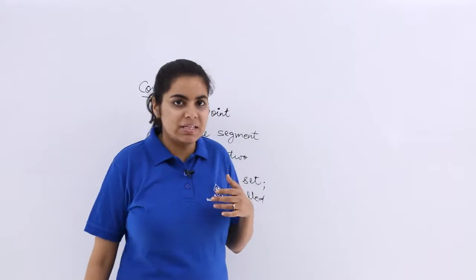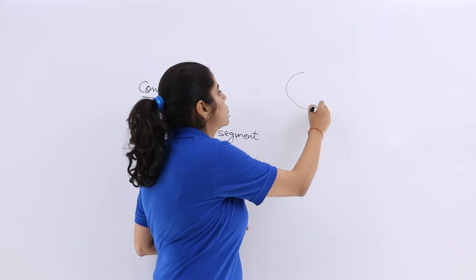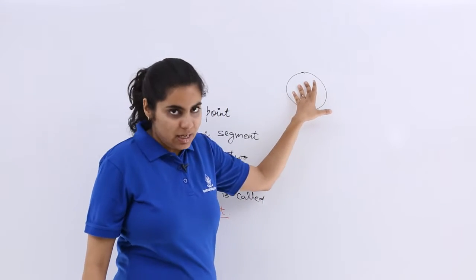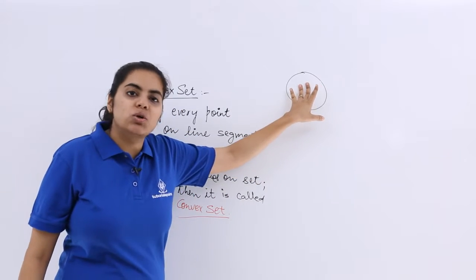Let's see with the help of some examples. Suppose I have this diagram which is a circle. Now if you have this diagram, you have to decide whether it is a convex set or not.